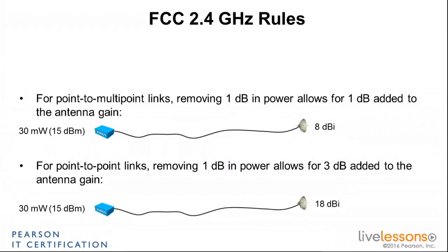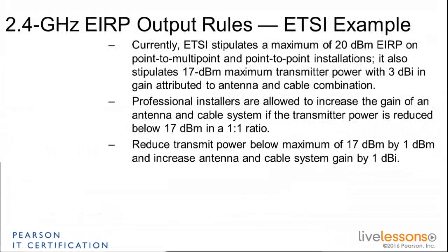That's the FCC, which is a fairly complex rule set. In the ETSI domain in Europe, they stipulate a maximum EIRP of 20 dBm, assuming a 17 dBm transmit power and a 3 dB antenna gain. The rule is simply that every dB you lose at the transmitter, you gain on the antenna — the one-to-one rule — and they don't differentiate between point-to-point or point-to-multipoint; they just have one single rule. So it's simpler than the FCC, which has two different rules depending on the application your outdoor link is designed for.